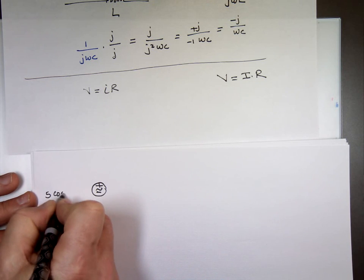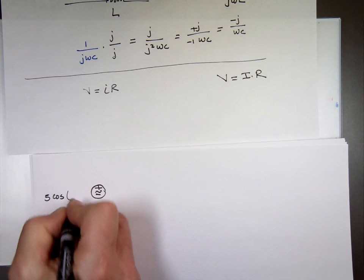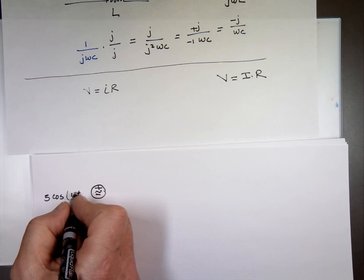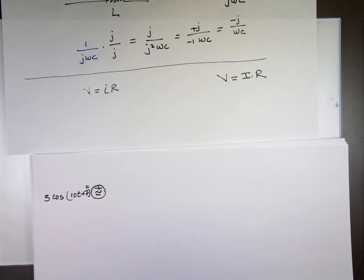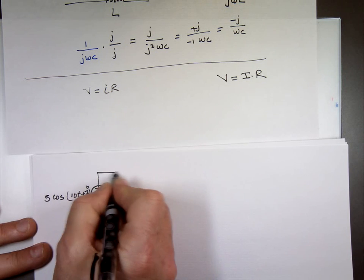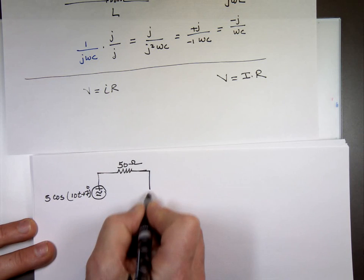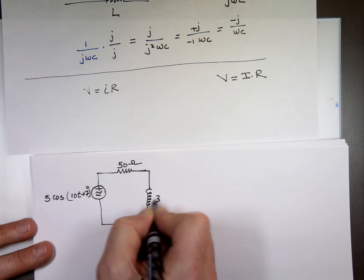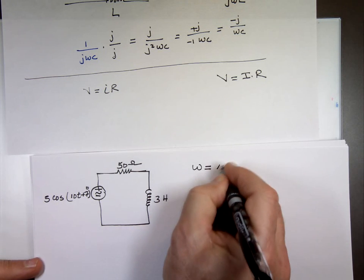What do you want? Five cosine what? Somebody pick a number. 10t, is that what we said? Oh, seven. Plus seven. There we go. Here's a phase shift, seven degrees. We have a resistor, 50 ohm. I'm just making things up. And we have an inductor, 300 mH. First thing first, what is ω here? 10. Very good. That's this number.